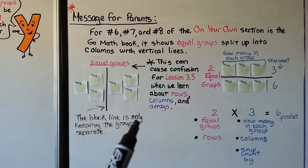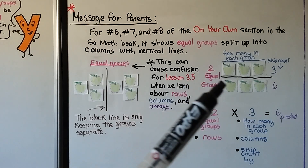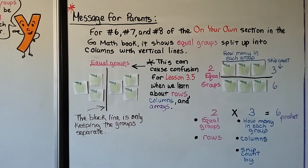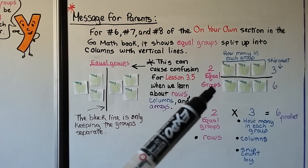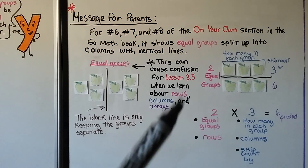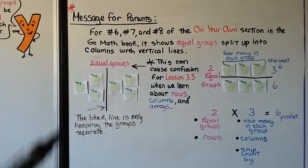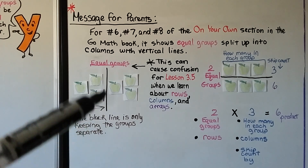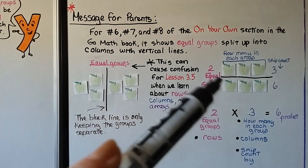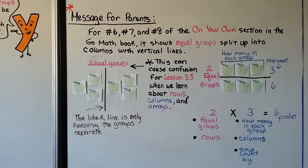You're going to want to show the student that you can put the line going horizontally to show two equal groups and how many are in each group, then skip count coming down the side. This shows two equal groups with three in each group, which is equal to six. The black line has nothing to do with rows or columns — it's just splitting them into equal groups.